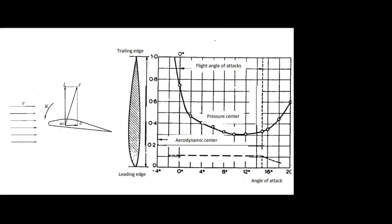We have two definitions. If you take the center of pressure for different angles of attack, you see this graph - it is not constant, it is varying. Initially it may be out of the airfoil; for some negative angle it goes out of the airfoil. At 0 degrees maybe 0.7, and it keeps on varying. At 7 degrees it comes closer to the quarter chord point - around 0.25. At some angle it coincides with 0.25, then after stalling it moves back to the trailing edge. So the center of pressure location is not constant. If you vary the angle of attack, the position will also vary. That is why we are going for another definition: aerodynamic center.